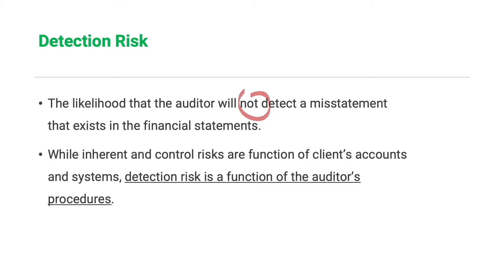Detection risk cannot be reduced to zero because the auditor does not examine all documents or evidence of the client, and also because of other factors such as the possibility of the auditor selecting an inappropriate procedure, misapplying an audit procedure, or misinterpreting the results. These are the factors we must consider in assessing the acceptable detection risk.